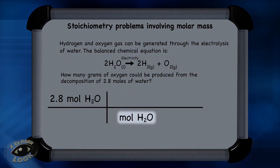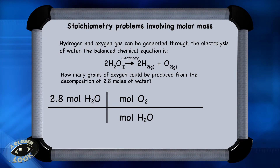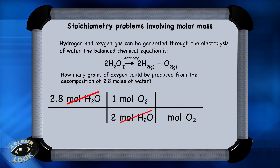Bring down the units — moles of water — and in this problem, convert to moles of oxygen first using the mole ratio step. There are 2 moles of water for every 1 mole of oxygen according to the balanced equation, so put a 2 for water and a 1 for oxygen. The units of moles of water cancel because they appear in both numerator and denominator. You can't stop here though, because that would give moles of oxygen, and the question asked for grams of oxygen. So continue using the conversion chart — draw another box and bring moles of oxygen down.